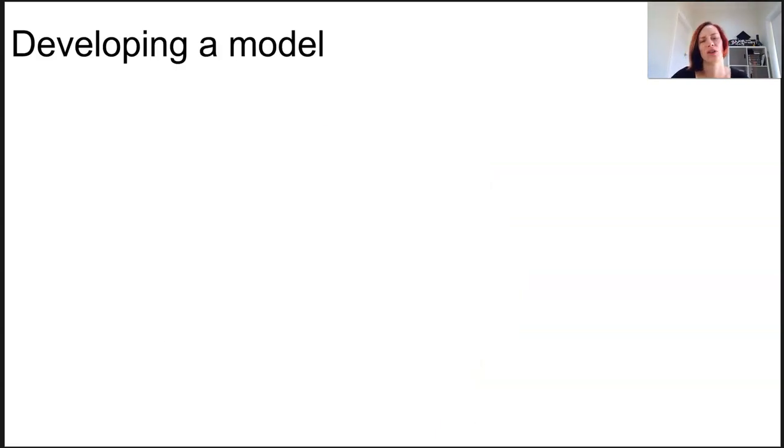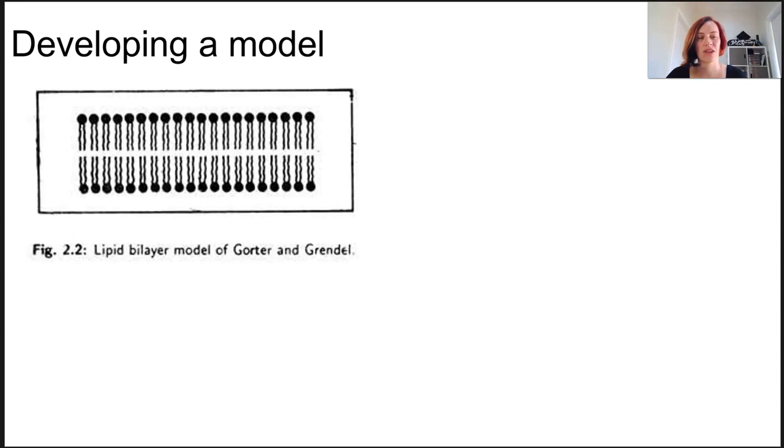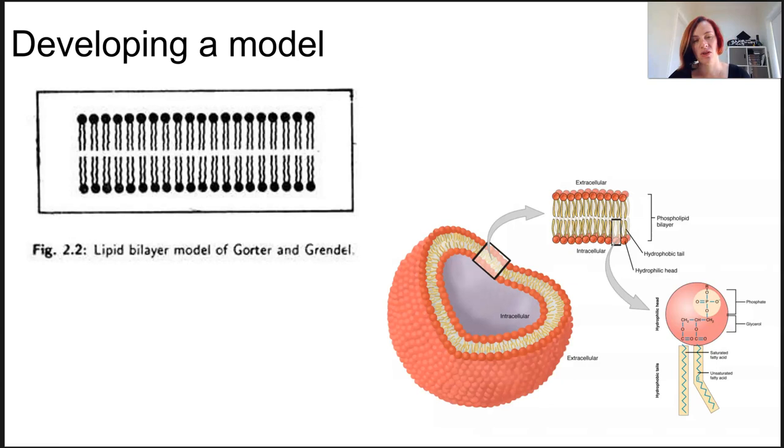Many scientists over the 20th century had a crack at determining how the cell membrane was actually arranged. Gorda and Grendel determined in 1925 that it was made of a type of fat molecule known as a phospholipid, and decided to measure the number of phospholipids that were in a red blood cell.